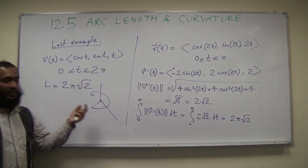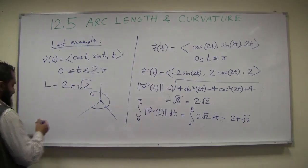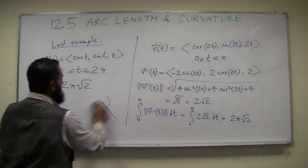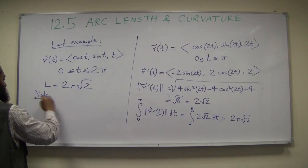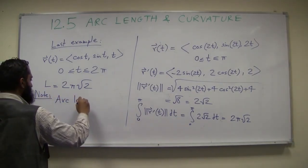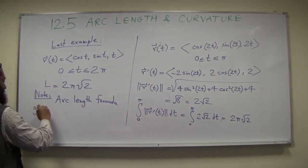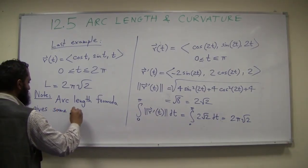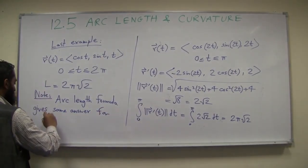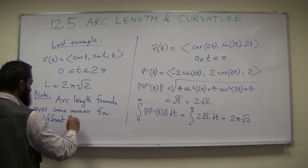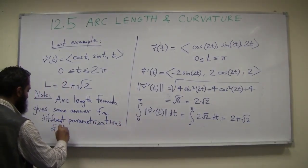We got the same length even though we had a different parameterization and different time interval values. This is important to note: the arc length formula gives the same answer for different parameterizations of the same curve.